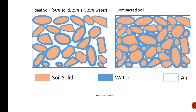An ideal soil, as I've already mentioned, is 50% solid, 25% air, 25% water. The beige color represents soil solid, the blue is water, and the white is air. You can see there's plenty of space for water and air on the left-hand side. But when you get into compacted soil, very little air is available and water just kind of stays there — if you can even get it into the soil.